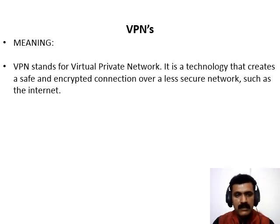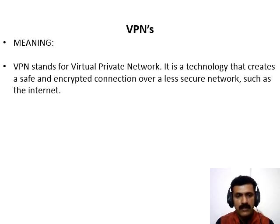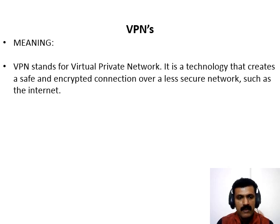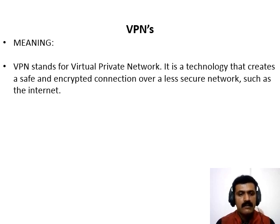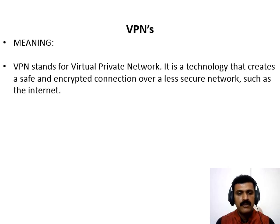VPN is a private point-to-point connection between two machines or networks over a shared or public network such as the internet. A virtual private network is a combination of software and hardware. VPN technology can be used in organizations to extend its safe encrypted connection over less secure internet to connect remote users, branch offices and partners' private internet network. VPN turns the internet into a simulated private network.